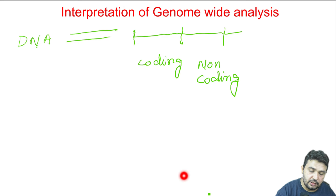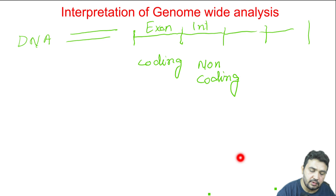There is a coding part and a non-coding part. The coding part is called an exon. The non-coding part is called an intron. If there is another coding region, it would be exon 2, and if there is another non-coding part, it would be intron 2.